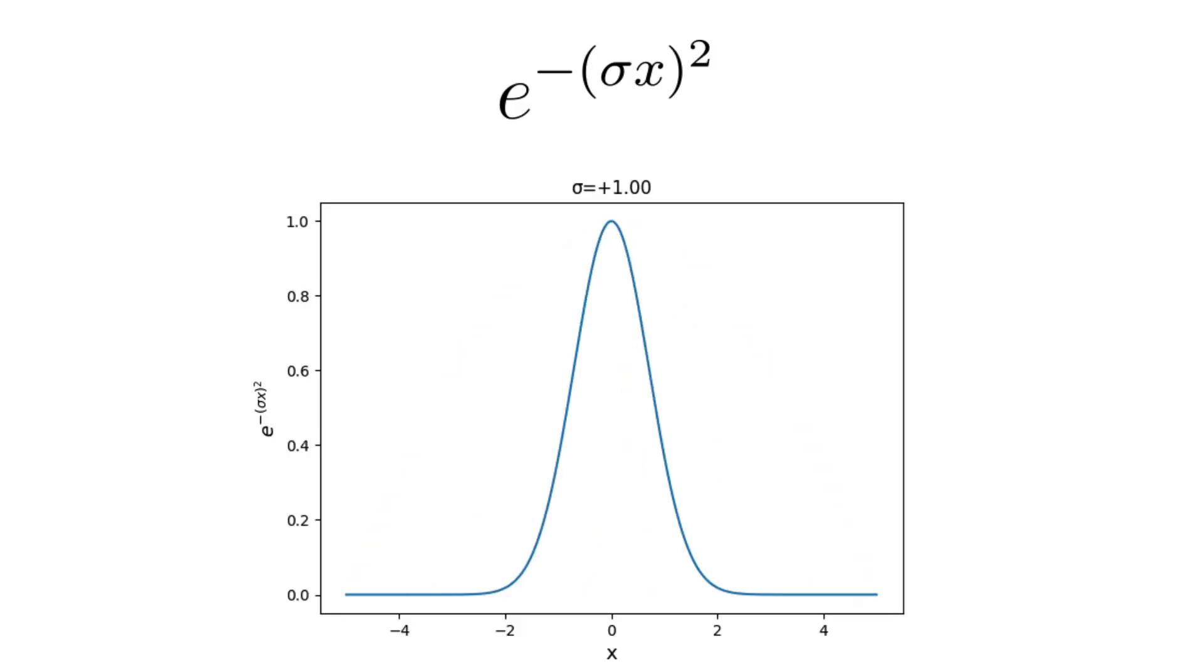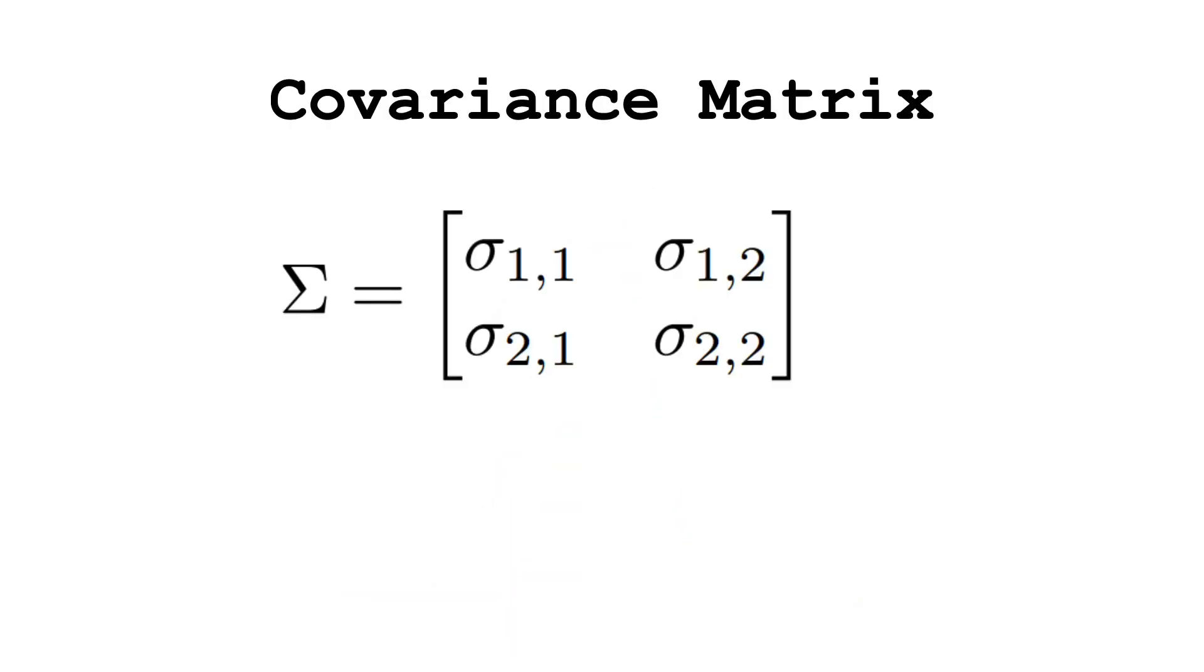Now let's see how this concept of spread translates to the multidimensional case and how the covariance matrix helps us encapsulate it. In the multidimensional case, the covariance matrix sigma plays a similar role to the variance in the 1D case, but with some important differences.